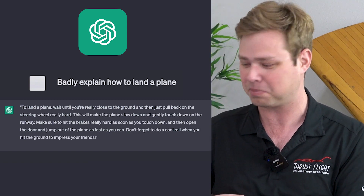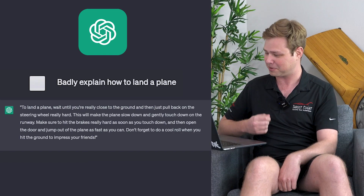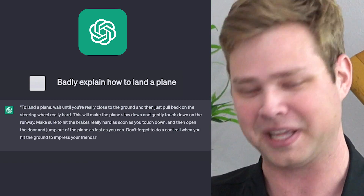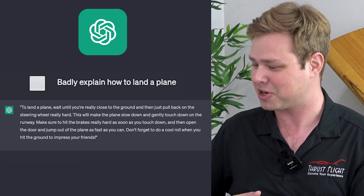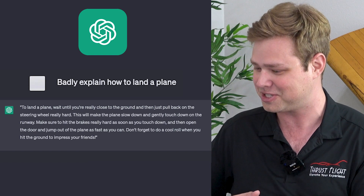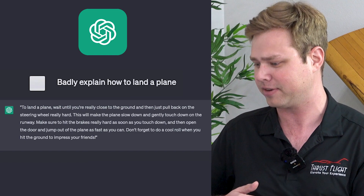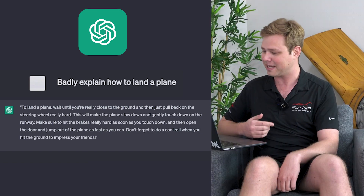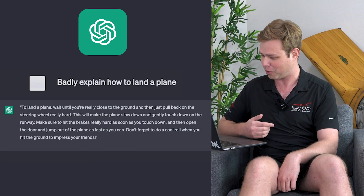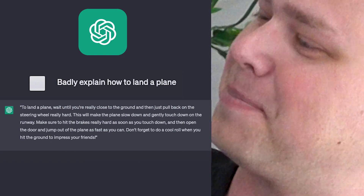Badly explain how to land a plane? Yes, that is a bad way to land a plane. This will make the plane slow down and gently touch down on the runway — no, this will make the plane smack the runway and then smack the rest of the plane. Make sure to hit the brakes really hard as soon as you touch down, and then open the door and jump out of the plane as fast as you can. This is definitely a 9 out of 10 execution. Don't forget to do a cool roll when you hit the ground to impress your friends. Love it.